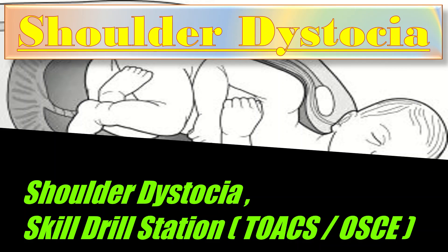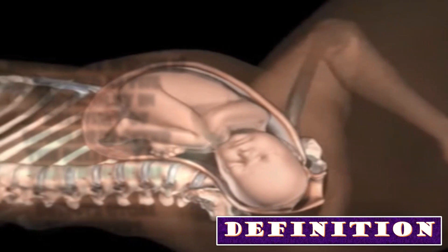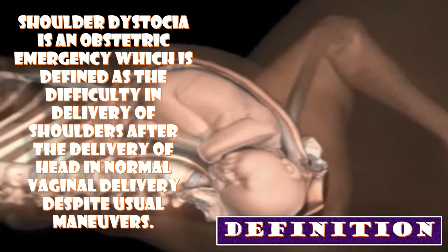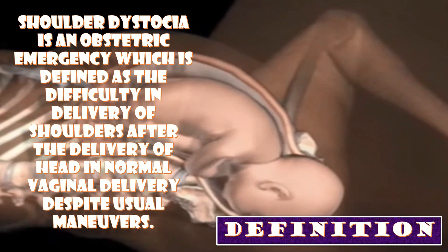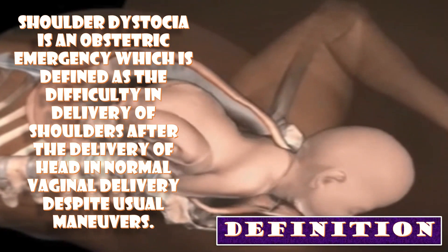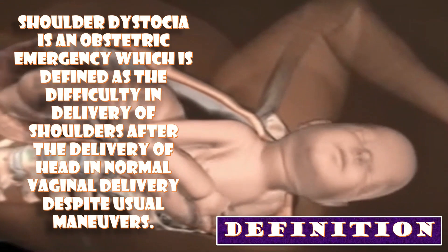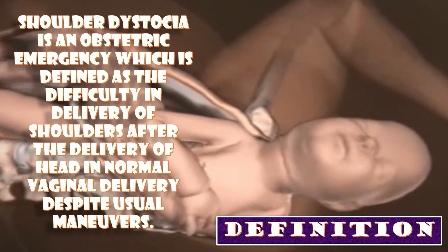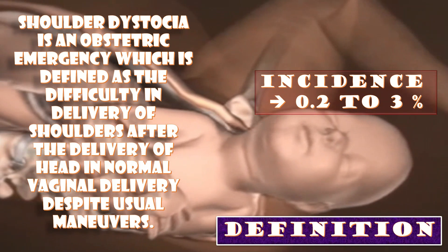Today we will discuss the shoulder dystocia skill drill station for TOKs and OSKIs. Shoulder dystocia is an obstetric emergency defined as difficulty in delivery of the shoulders after delivery of the head in a normal vaginal delivery, despite the usual maneuvers. The incidence of shoulder dystocia is 0.2 to 3 percent.